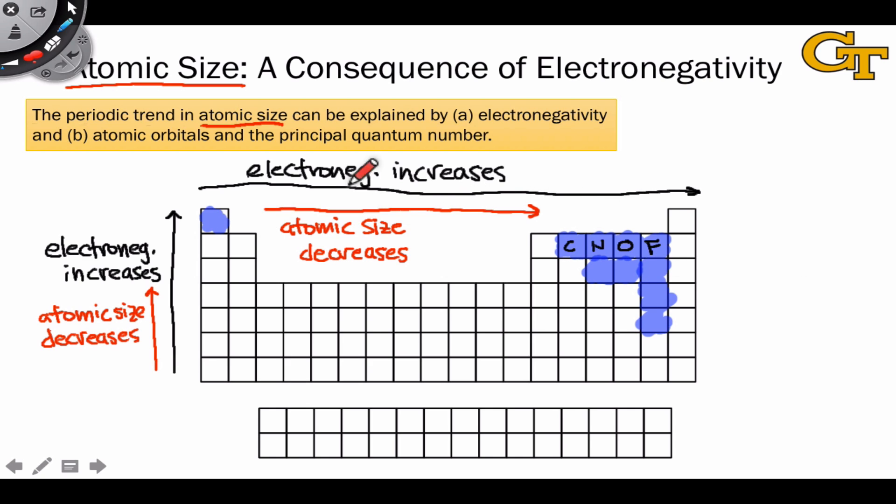The atomic size trend is a great example of the power of electronegativity as a concept. In thinking about atomic size as we move left to right across a period, we can imagine that the atom holds its electrons more tightly on the right-hand side of the periodic table than it does on the left-hand side of the periodic table, where the atom is quite a bit less electronegative.